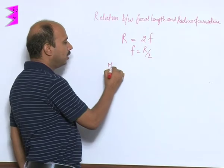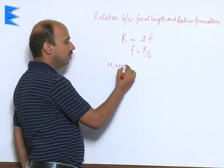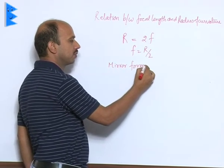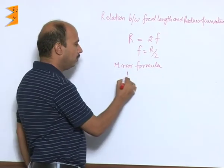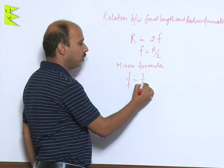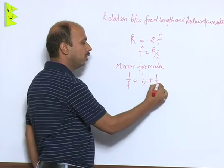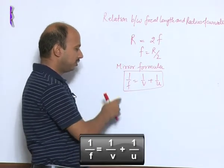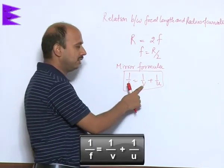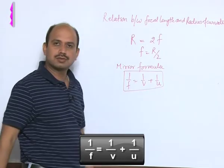Now, we can write another one is mirror formula. Mirror formula we can take 1 upon f is equal to 1 upon v plus 1 upon u. This one is mirror formula, here f is focal length, v is image distance, u is object distance.